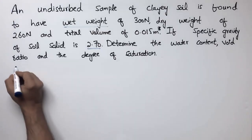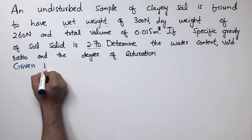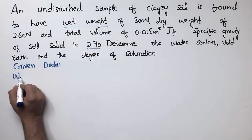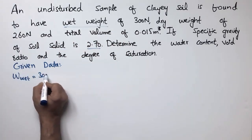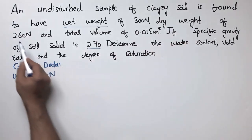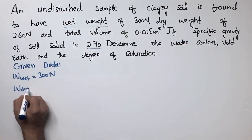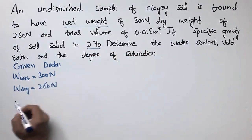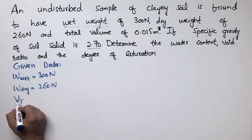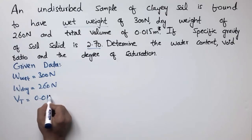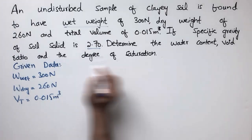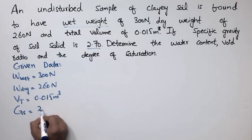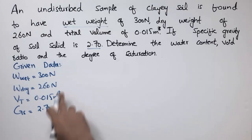...determine the water content, the void ratio, and the degree of saturation. So first we write the given data. The wet weight of the soil is 300 Newton, the dry weight of the soil is 260 Newton, the total volume Vt is equal to 0.015 cubic meters, and the specific gravity Gs is 2.70.